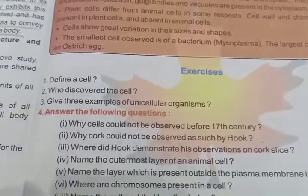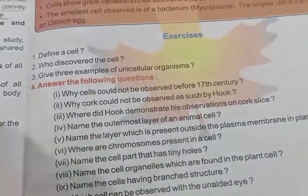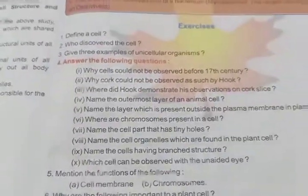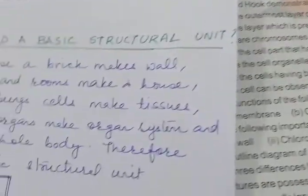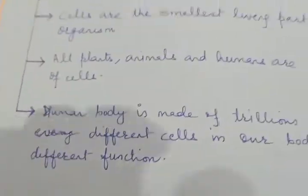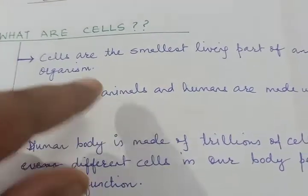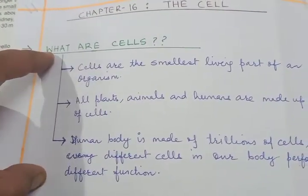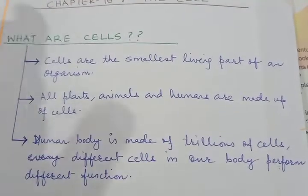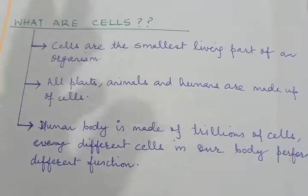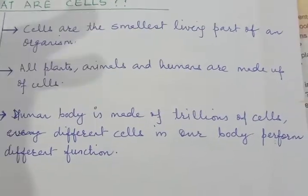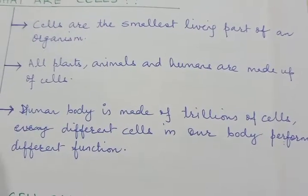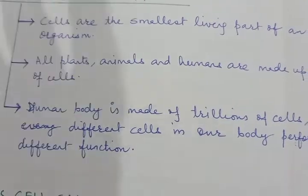The first question is: define cell. Cell is the basic unit of life. For whatever questions are already in your notes, please do not rewrite them — you can write answer number 1, but don't waste your time rewriting. Cells are the smallest living part of an organism. All plants, animals and humans are made up of cells. The human body is made of trillions of cells, and different cells perform different functions.